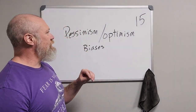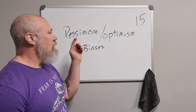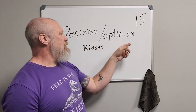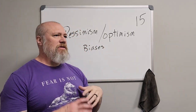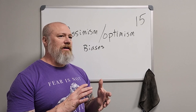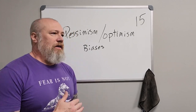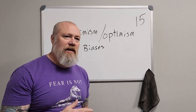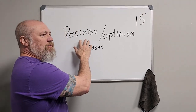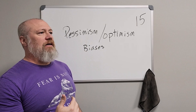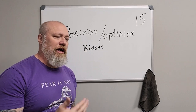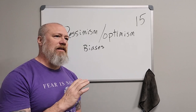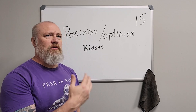Number 15 on the cognitive distortions list is a pair — pessimism and optimism biases. Pessimism is a tendency toward a negative outlook on everything. Even when something good happens, you tend to focus on the negative aspects. This usually develops as a defense mechanism — maybe you've been disappointed too many times, or you had adverse childhood experiences (ACEs) that led to a pessimistic outlook.